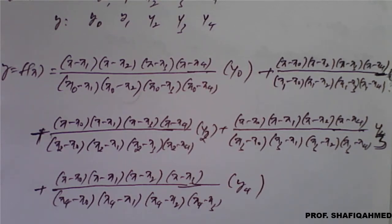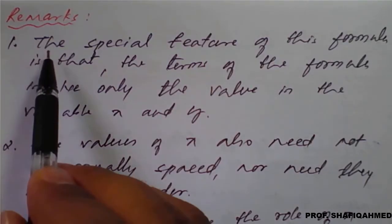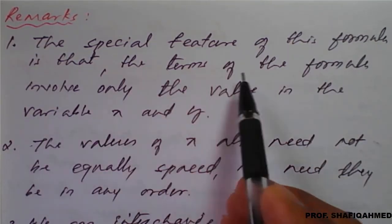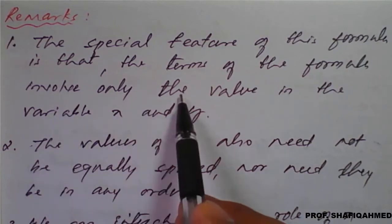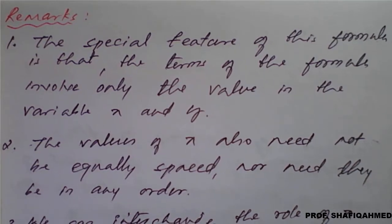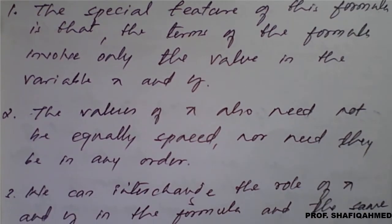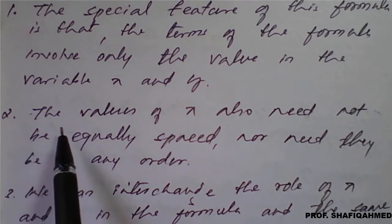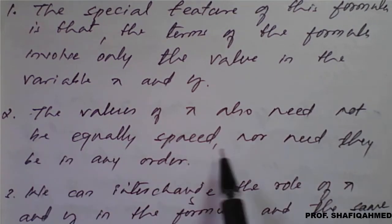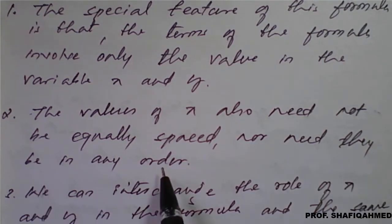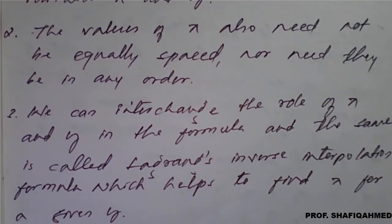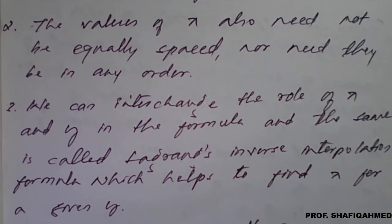So let's see one important remark. Remark one: the special feature of this formula is that each term of the formula involves only the values of the variable x and y. In the formula we have only the values of x and y which we need. Remark two: the values of x need not be equally spaced, nor need they be in any order, so however the values are given we can use them directly — no need to rearrange, no need to check the interval.